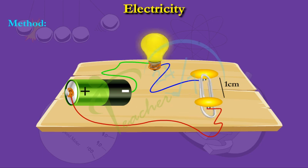Turn the paper clip such that it touches both the drawing pins. The bulb glows and the switch is ready.